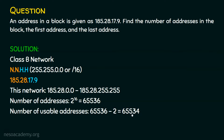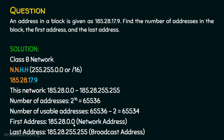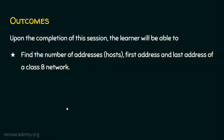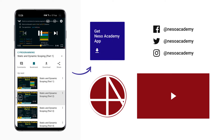So the first address, which is the network address, is 185.28.0.0, and the last address, which is the broadcast address, is 185.28.255.255. I hope now you know how to find the number of addresses or hosts, the first address and the last address of a class B network. Class B network has more number of hosts than class C network. Thank you for watching.